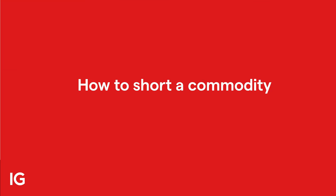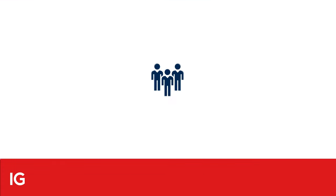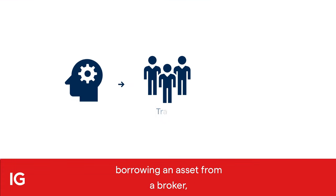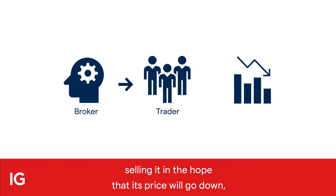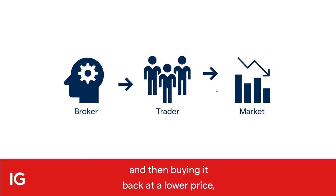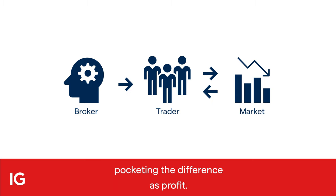So how does it work? The traditional method of short selling involves borrowing an asset from a broker, selling it in the hope that its price will go down, and then buying it back at a lower price, pocketing the difference as profit.